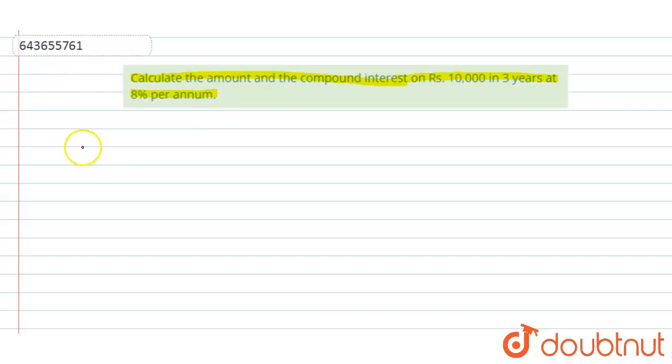First, let us write the given conditions. Here, principal P = Rs. 10,000. The time is three years, and since the interest is compounded annually, we write n = 3. The rate of interest R = 8% per annum.